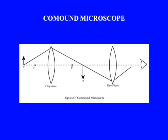The object is placed just after the focal length of the objective lens. The objective forms an image which is a real, inverted image, as we discussed in the last lecture. This real inverted image acts as an object for the eyepiece, and the eyepiece forms another image which acts as an object for the eyes.